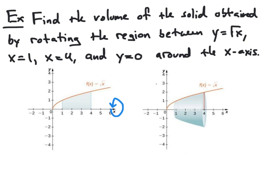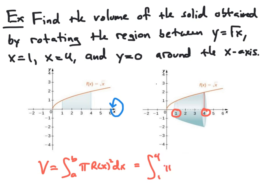So we know our volume will be given by the formula: the integral from a to b of pi times r of x squared, where r of x is the radius at x. We simply need to find the values of a, b, and r. Here, a and b are basically given to us — they're the boundaries on the x-axis for our solid. Our solid is lying between x equal 1 and x equal 4, so we're going to have the integral from 1 to 4 of pi times our radius squared.